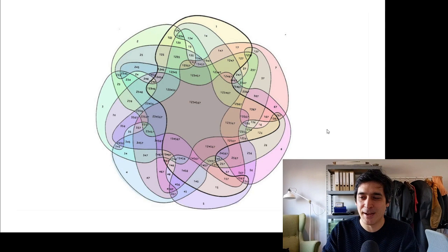We're going to start a little abstract. Imagine you have a draft environment with seven different mechanical themes, and you try to visualize the overlap between those themes as a Venn diagram. A well-designed environment looks something like this groovy seven-set Venn diagram, where there's lots of cool intersection and overlap between your themes and mechanics.